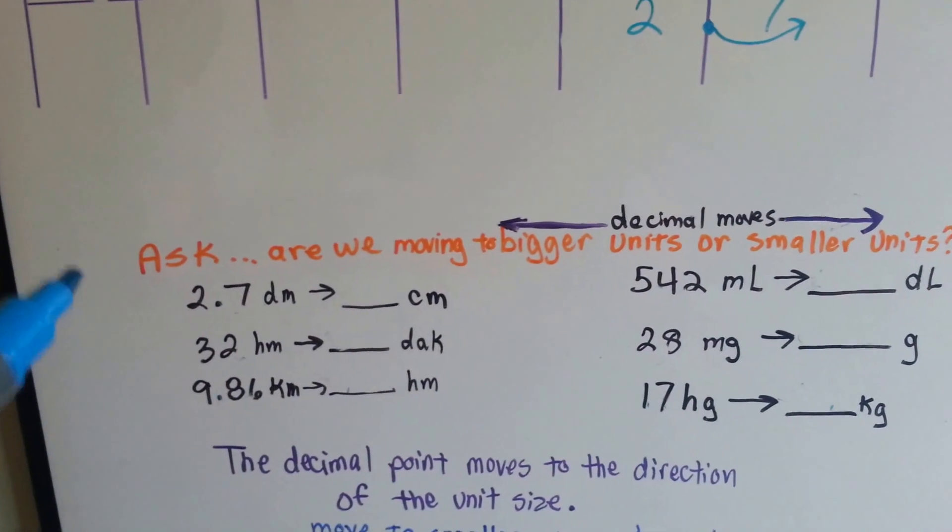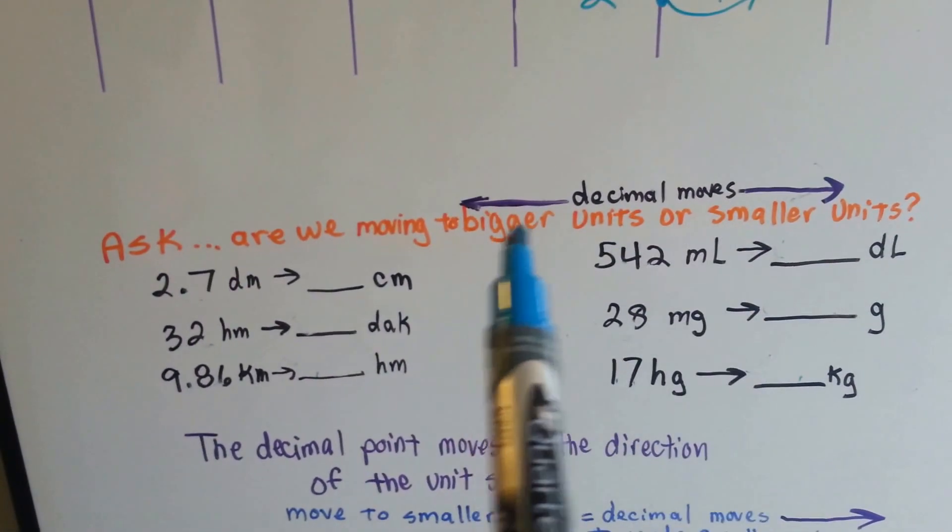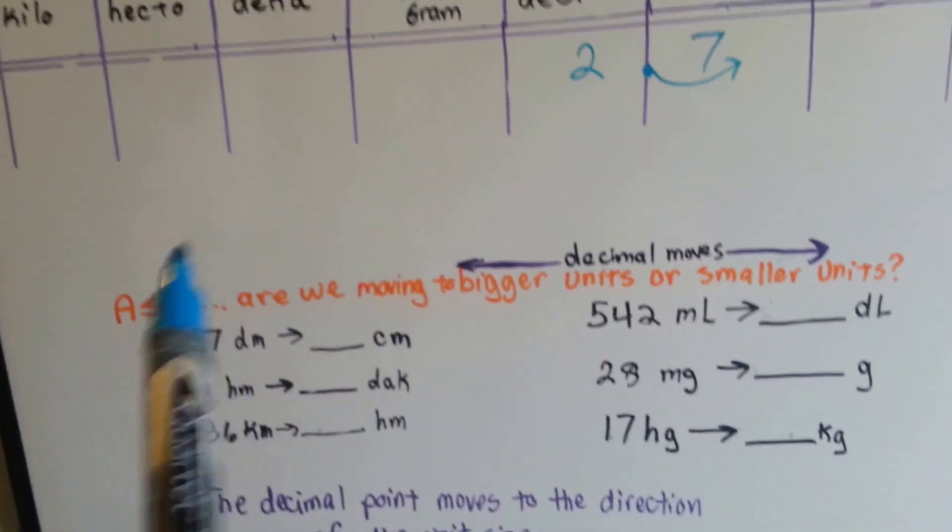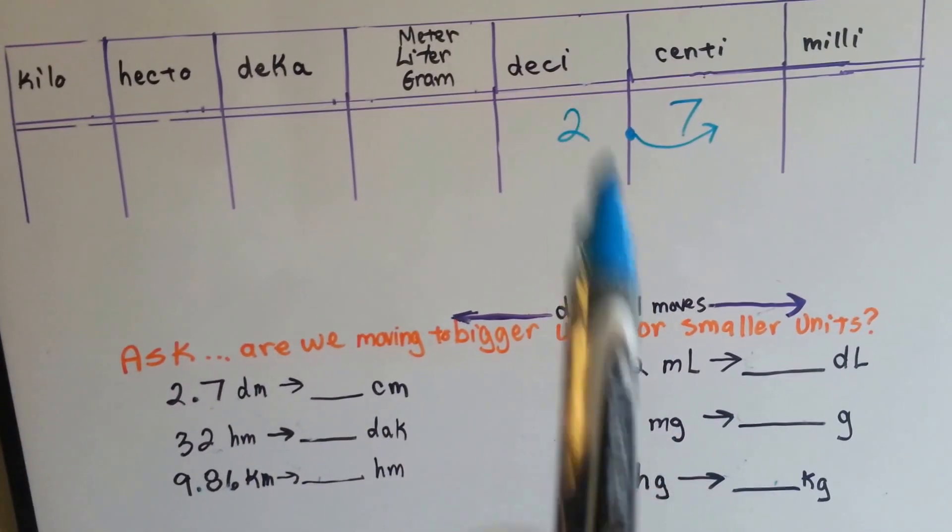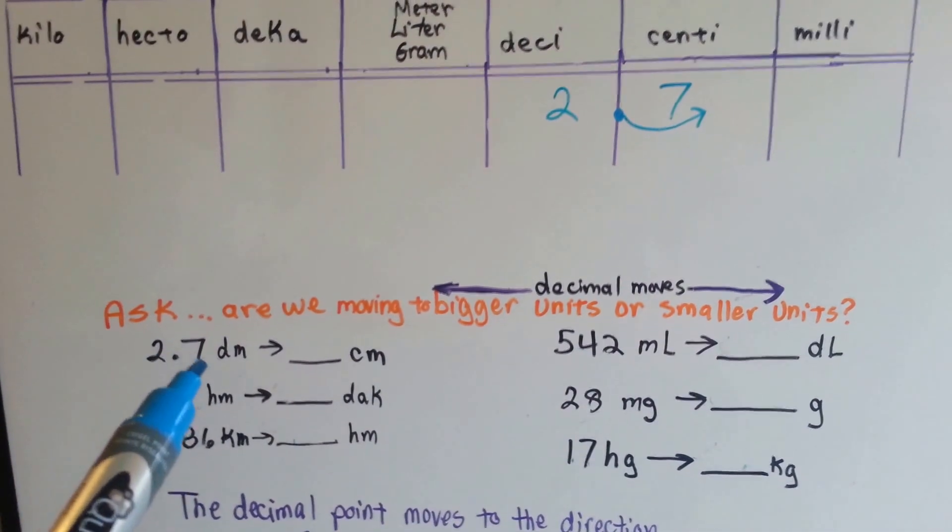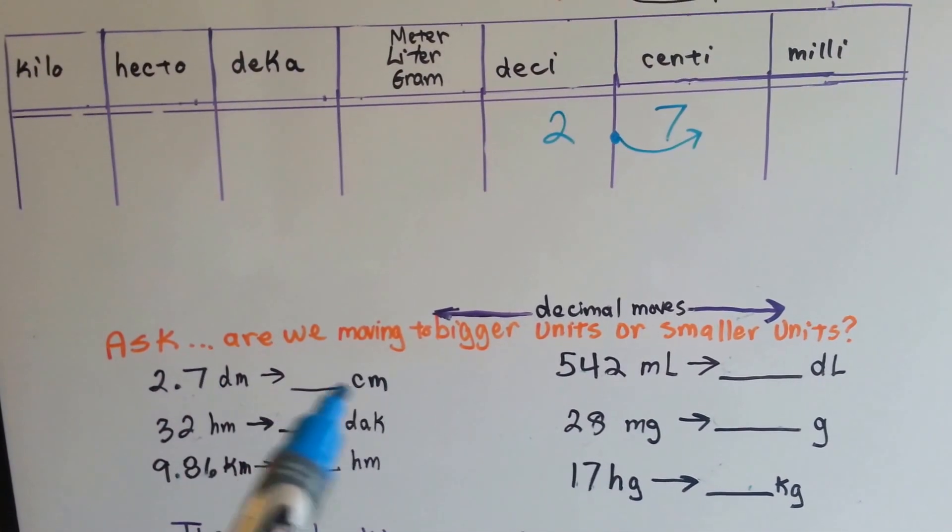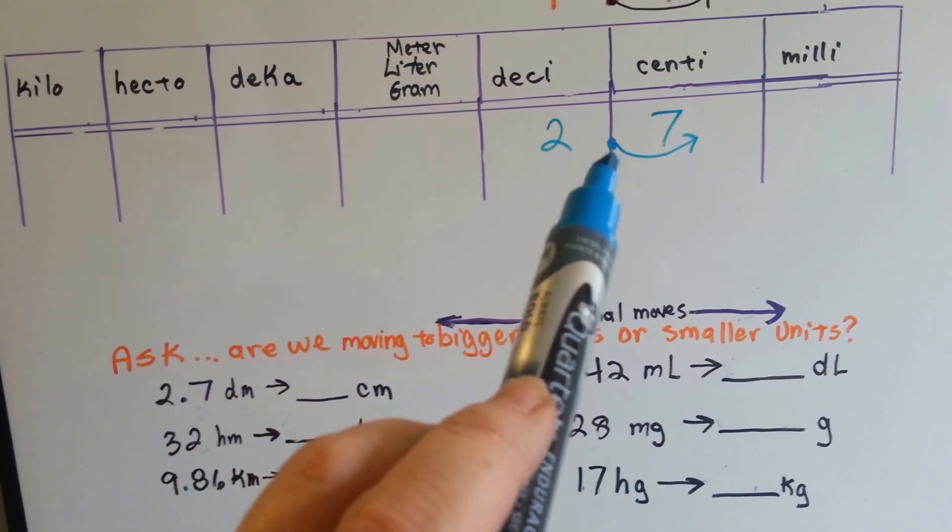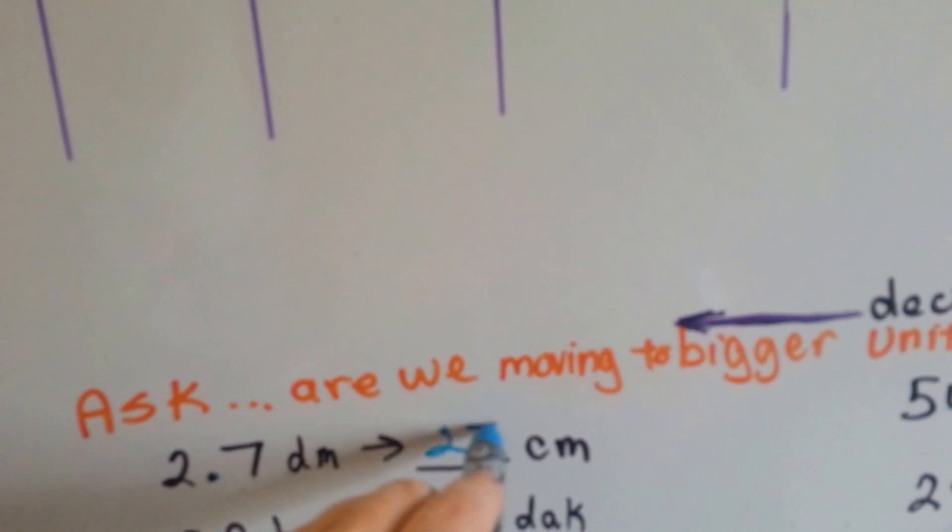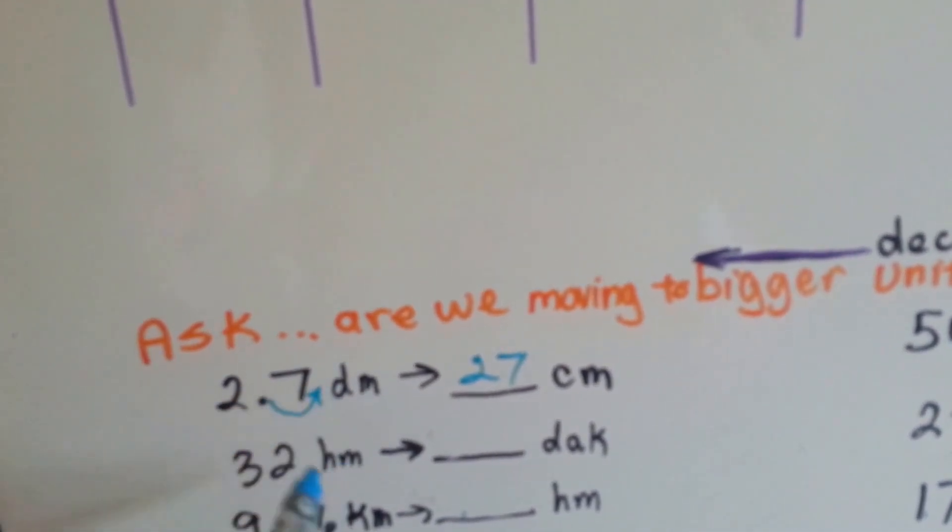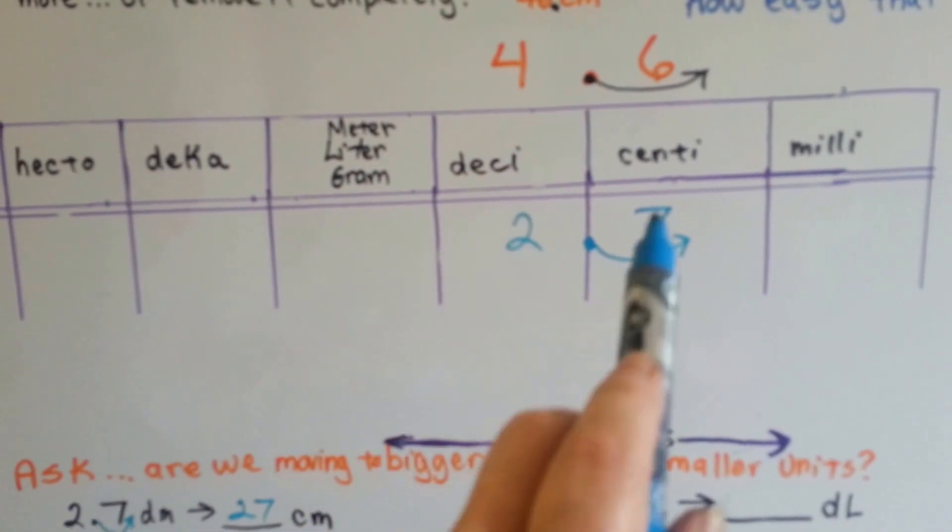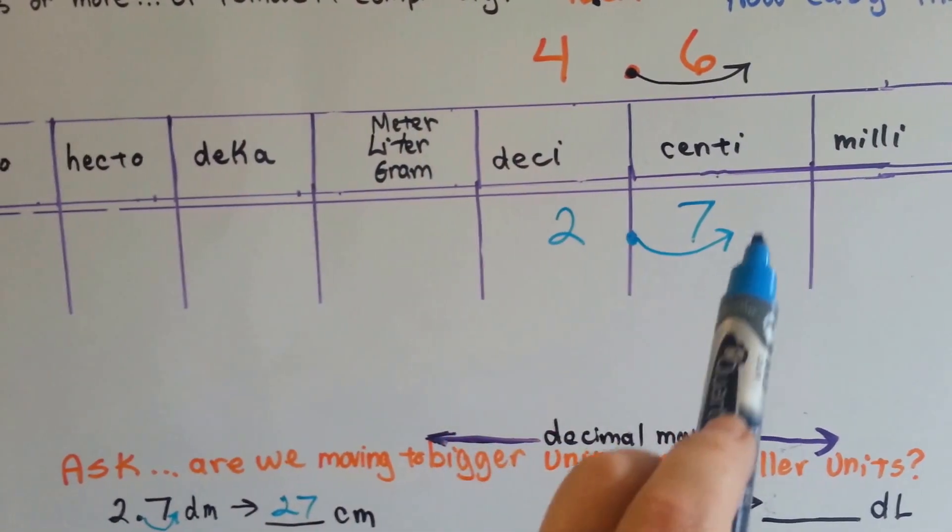So, we ask ourselves, are we moving to bigger units or smaller units? Whichever we do, the decimal moves with us. If we move to a bigger unit, the decimal point moves towards these bigger units over here. If we're converting to smaller units, the decimal point moves towards the smaller units. Look at 2.7 decimeters. We want to convert it to centimeters. All we have to do is take this decimal point and move it to the other side of the 7, and it becomes 27 centimeters. Because we're moving to centi, which is smaller, the decimal point moves towards the smaller.